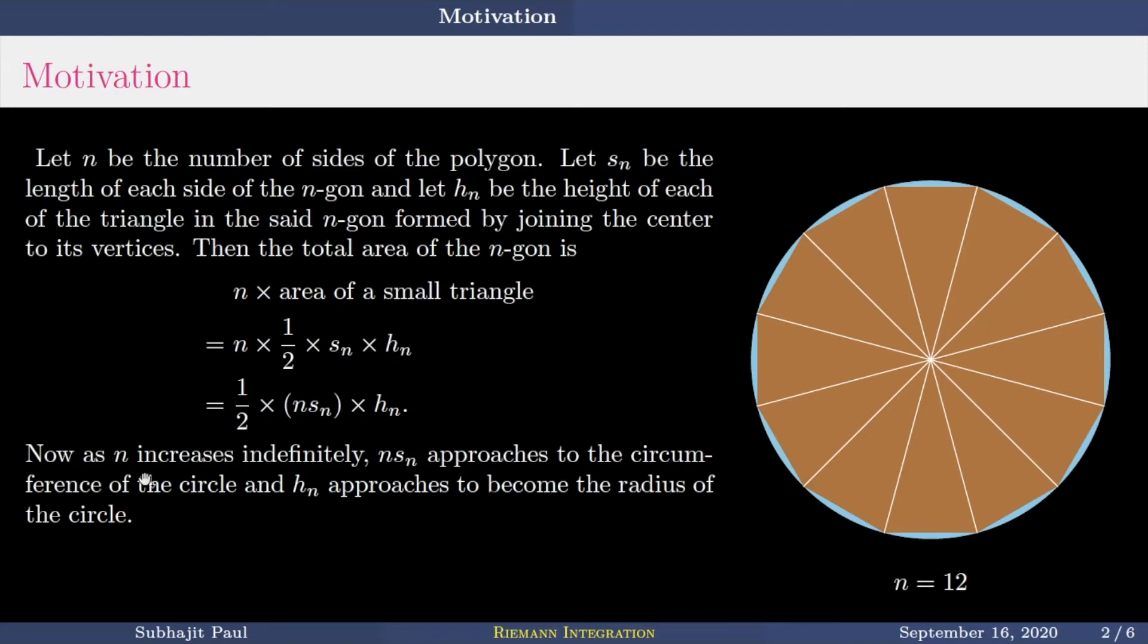So that is why I am just taking the sense that N is increasing indefinitely, and then N s_N is approaching to become the circumference of the circle and h_N approaches to become the radius of the circle, instead of using the notation of limit or things like that. So for sufficiently large N, the area of a circle, because the area of the total polygon will tend to area of the circle, that will be half into N s_N will tend to circumference and h_N will tend to radius. So area of the circle will be half into circumference into radius. And that is the formula for area of a circle.